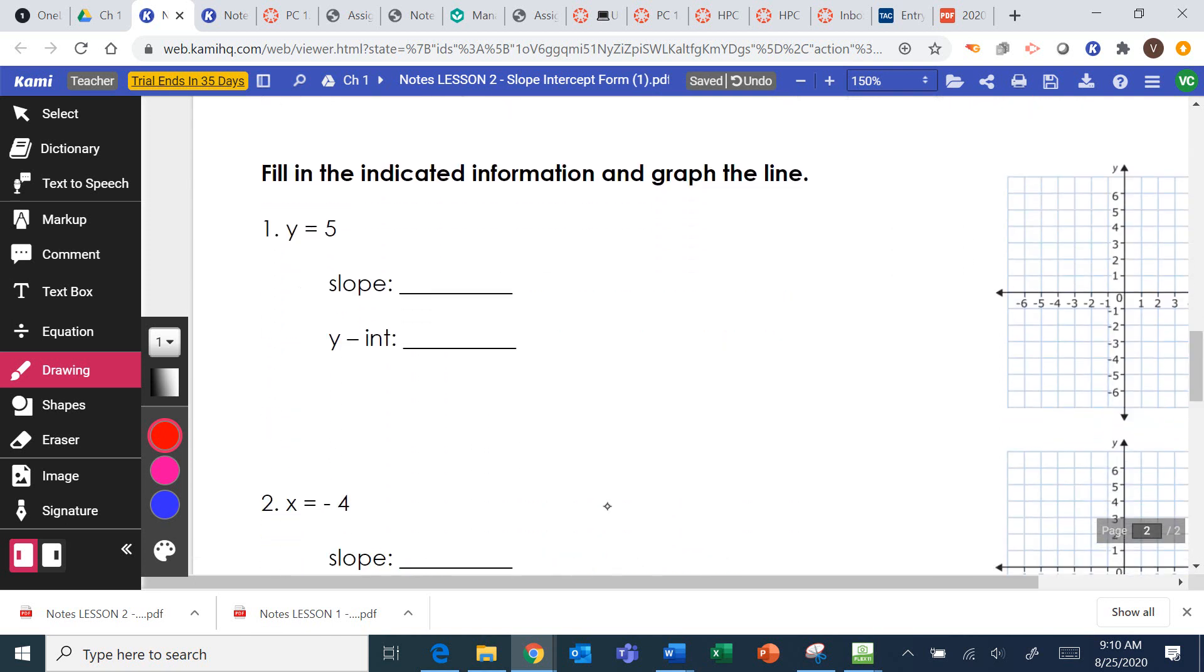So we're going to find the indicated information and graph the line. So this is what your assignment is going to look like. You're going to find the slope, the y-intercept, and also the x-intercept for each of these. And then we're also going to graph the line. So y equals 5. On the first page of notes, y equals 5 is a horizontal line where y is always 5. So we can pick some ordered pairs.